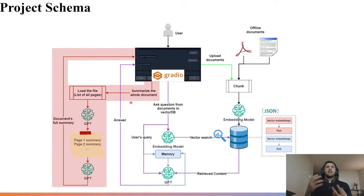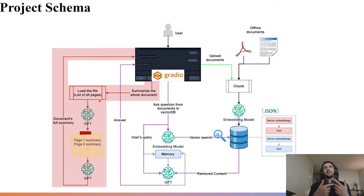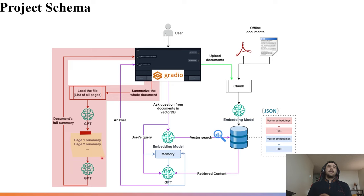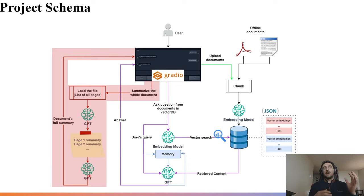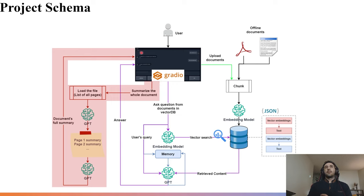For summarization, when you pass a PDF, it is divided page by page into a list. Each page is passed to a GPT model instructed to give a summary while keeping all key information. All page summaries are then collected into another list, which becomes the input for a second GPT model. That second model is instructed to review all summaries and produce a final comprehensive summary of the entire PDF.